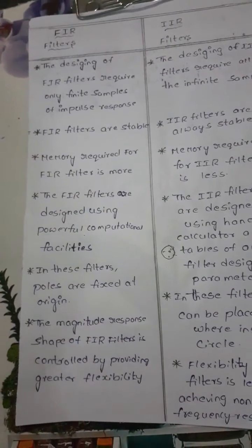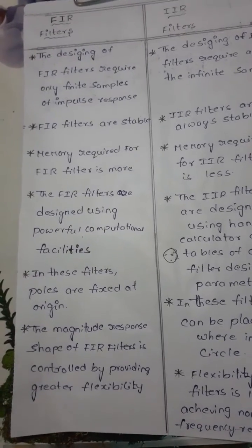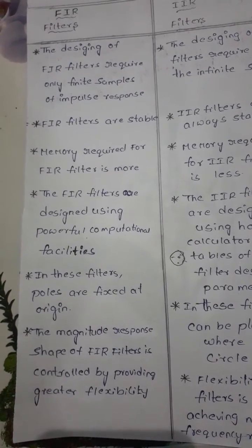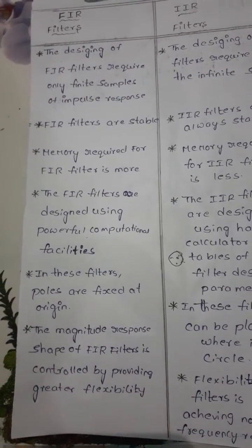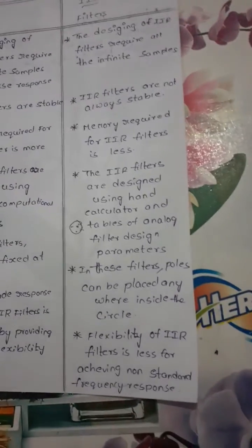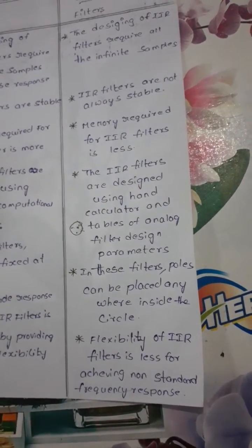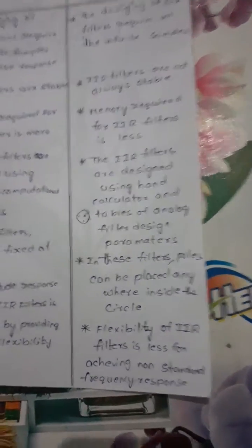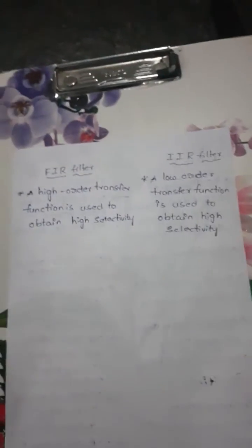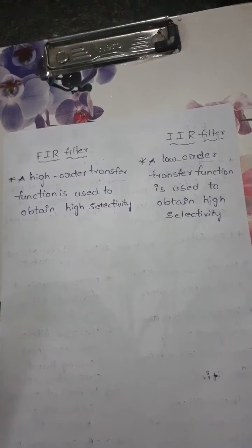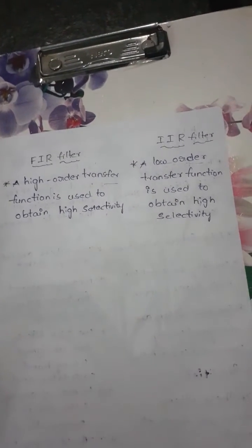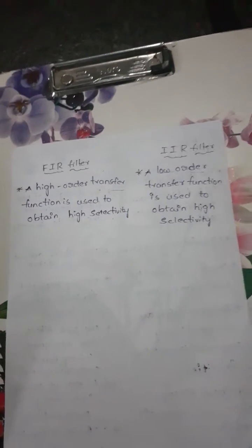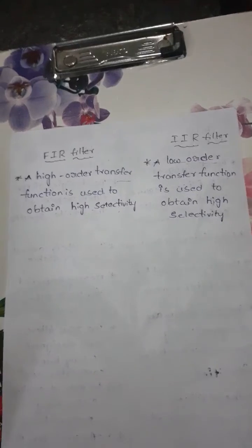The magnitude response shape of a FIR filter is controlled by providing greater flexibility, whereas the flexibility of IIR filters is less for achieving non-standard frequency response. In FIR filters, a higher order transfer function is used to obtain high sensitivity, whereas in IIR filters, a lower order transfer function is used to obtain high sensitivity.